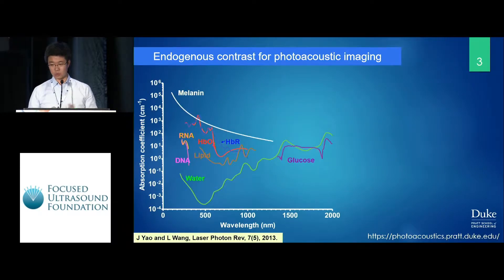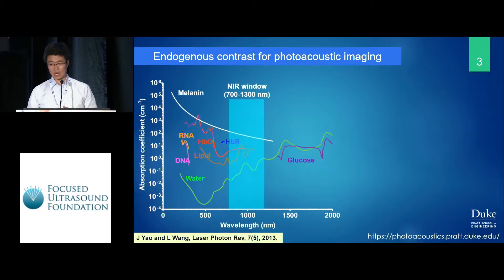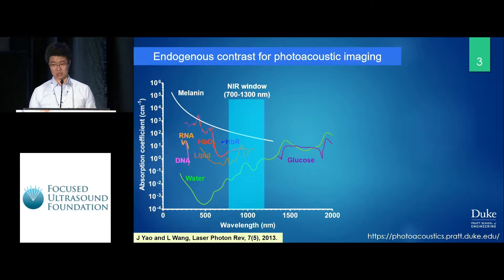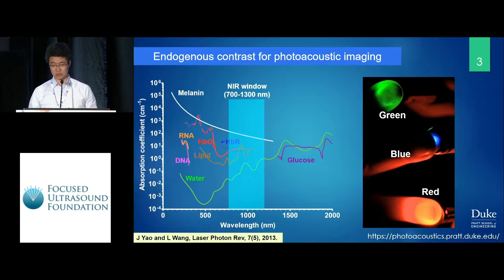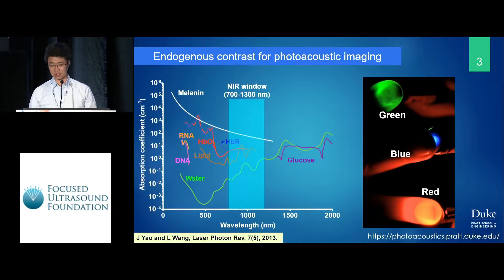We can image all kinds of molecules which absorb photons at different wavelengths. For example, we can use a near-infrared window, which is the most penetrating operative wavelength for biological tissue. We can image hemoglobin, melanin, lipid, and water, as well as other absorbers, which is true for most molecules. We prefer to use longer wavelengths that give us better penetration, just like a laser pointer shooting through the fingertip.